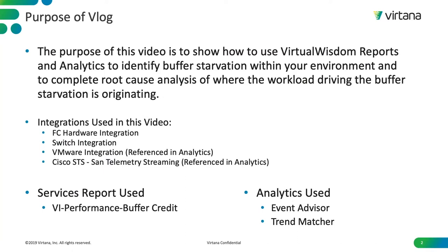The purpose of this video is to show you how to use Virtual Wisdom's reports and analytics to identify buffer starvation within your environment. It will also show you how to complete a root cause analysis of where the workload driving the buffer starvation is originating from. Integrations used in this video are Fiber Channel Hardware Integration, our Switch Integration, our VMware Integration, as well as our Cisco STS SAN Telemetry Streaming Integration. The Services Report used is VI Performance Buffer Credit and our analytics used are Advent Advisor and Trend Matcher.